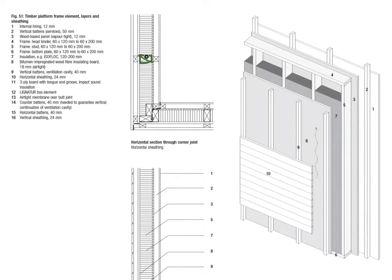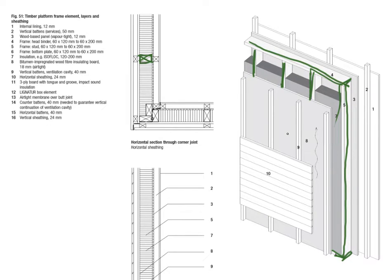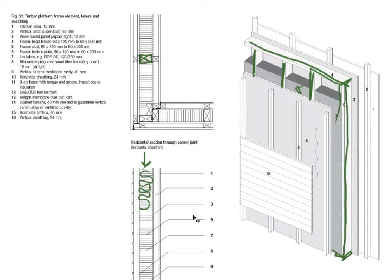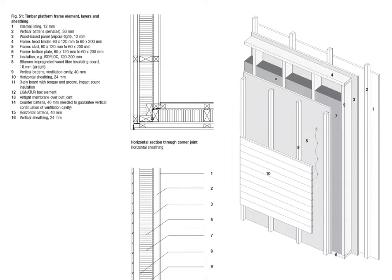In that core, we have timber studs — we can see them here in the axonometric view — and on top of them there's going to be a head binder and a bottom plate. Together they form these grid-like frames, hence the name timber frame construction. In the section we can't really see them because we're cutting through the insulation sitting in between the frames, not through the timber. If we were to cut through one of the timber studs, it would suddenly look like a solid piece of timber, which would give off the wrong impression of what the construction is about.